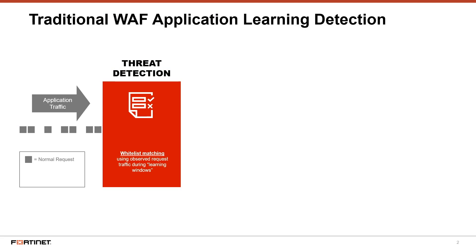Traditional web application firewalls, or WAFs, use a first-generation technology called application learning to detect threats. This method monitors user activity to build policies based on what it observes in action, creating whitelisted activities that are allowed to pass as normal application traffic.